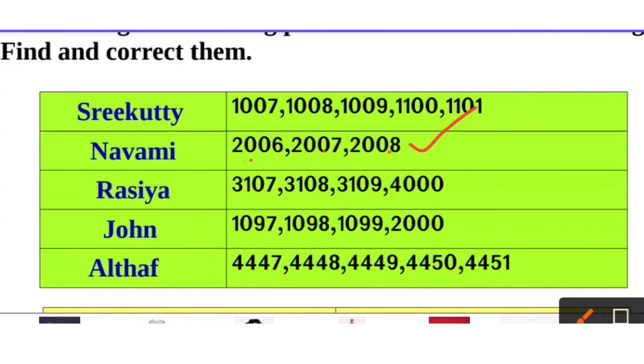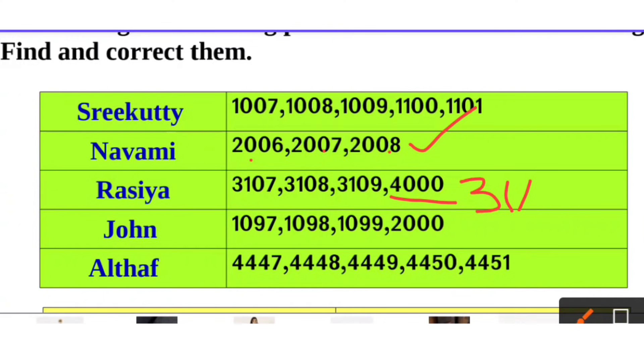This is 3107, 3108, 3109, and then 4000 — that is shaded as incorrect. The correct next number should be 3110.